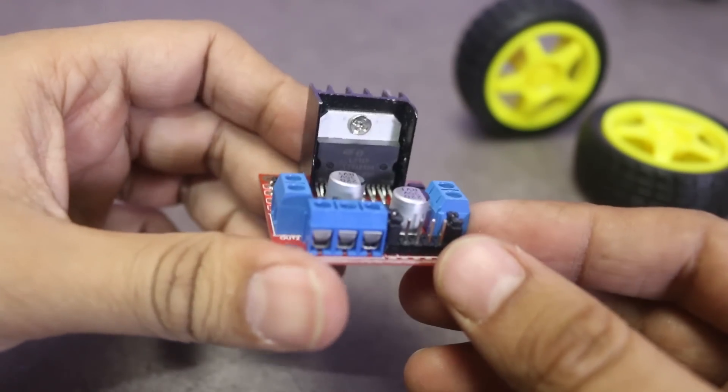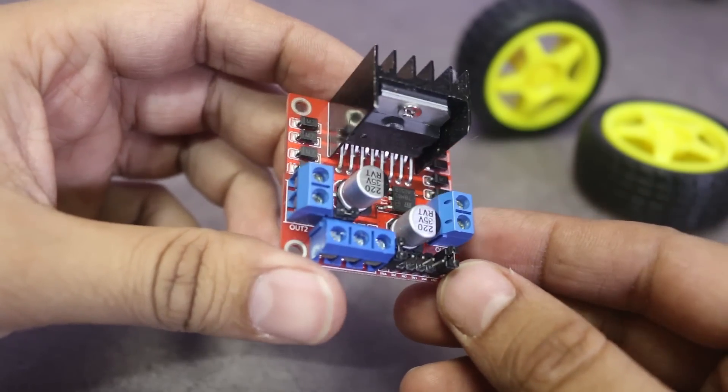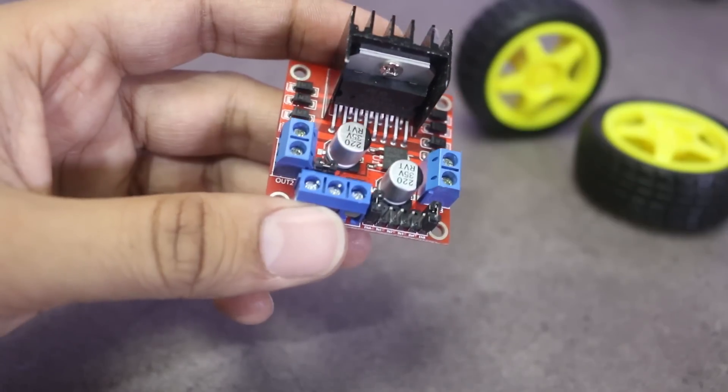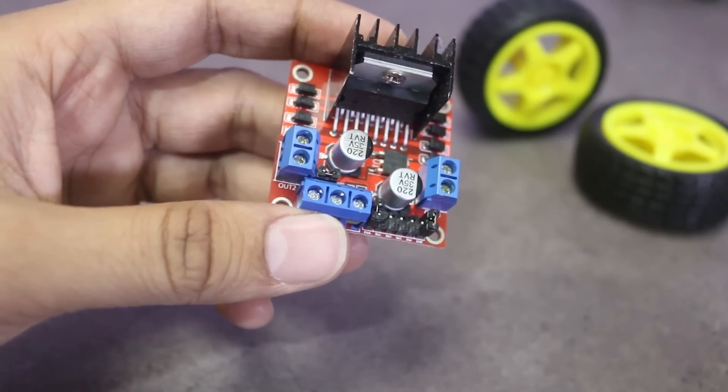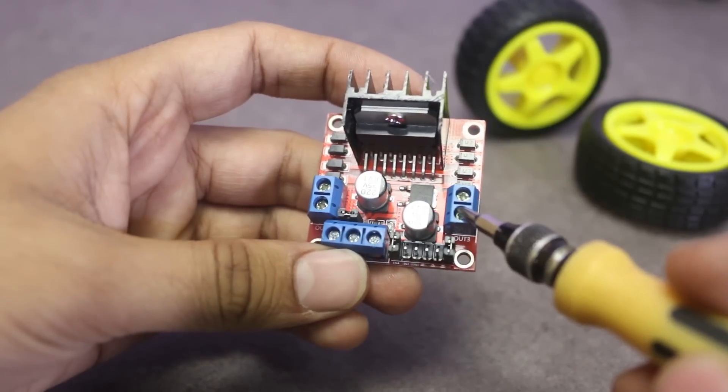Okay, let me explain the connections of this module. In this module, you can see two connectors on either side to connect two DC motors. You can connect one motor on the left connector and another motor on the right connector.